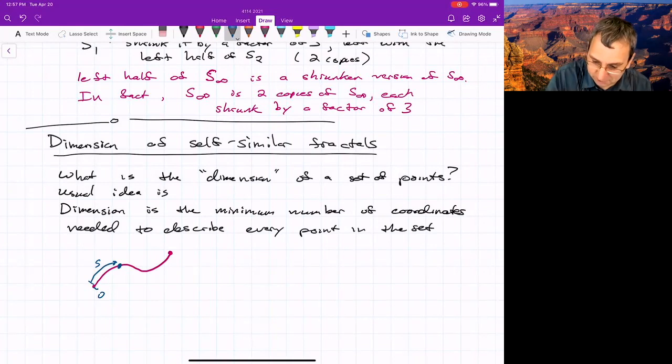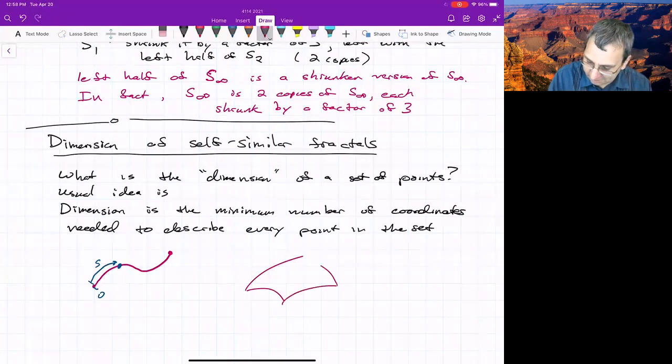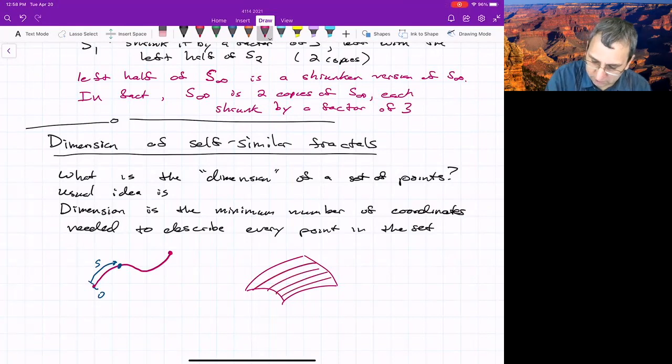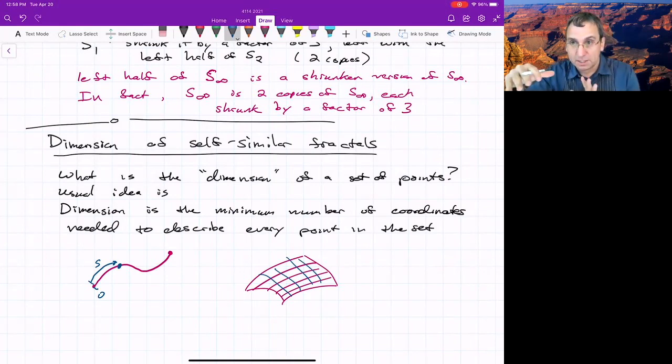And then the same thing for some kind of curved surface in 3D, or embedded in any dimension, actually. It's almost like you'd put down some coordinate lines, and then you'd say, well, if I specify those two numbers, then I've specified each point. I could specify every point in this set.